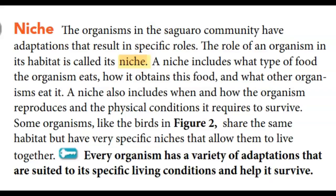The organisms in the saguaro community have adaptations that result in specific roles. The role of an organism in its habitat is called its niche. A niche includes what type of food the organism eats, how it obtains that food, what other organisms eat it, when and how it reproduces, and the physical conditions it requires to survive. Some organisms share the same habitat but have very specific niches that allow them to live together.